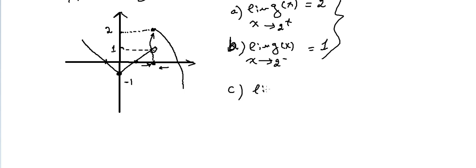Part C: limit of g(x) as x approaches 0 minus. 0 minus—this is 0, right? 0 minus, so it's here. If x is 0, then what will be the y? What will be the y? It's minus 1.